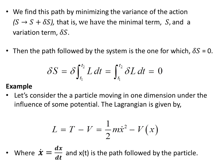And we find this path by minimizing the variance of the action. So that is we have a minimal term, S, and a variation term, δS. And the path followed by the system is the one for which δS is zero. And that can be, δS can be thought of as this form here, both these two mean the same. And we set that to zero.